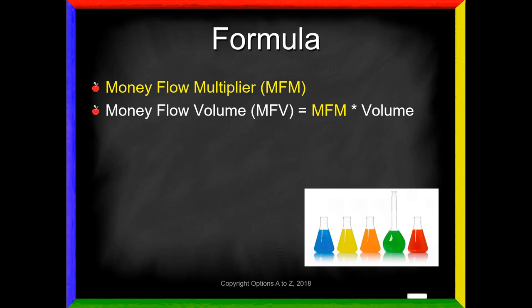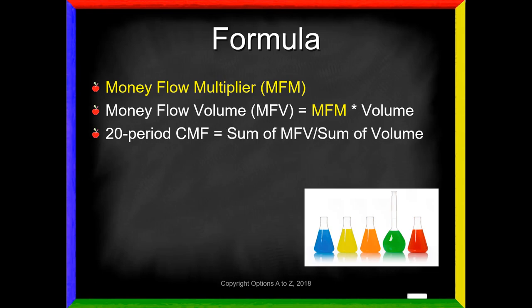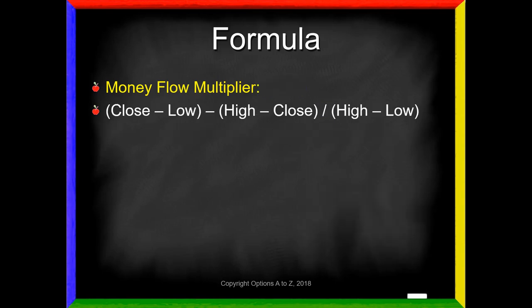If we're looking at the 20-period CMF, that would be the sum of the money flow volume divided by the sum of the actual volume. Conceptually, he's creating a calculation to do what we might call a transformation — an adjusted type of volume to account for money flow. Then he's going to compare that to the actual volume, which is why it's called an index. We're just trying to see how much bigger this money flow volume is in relation to the actual volume.